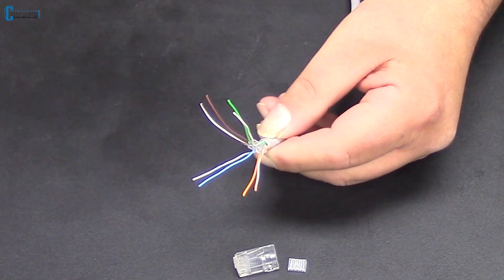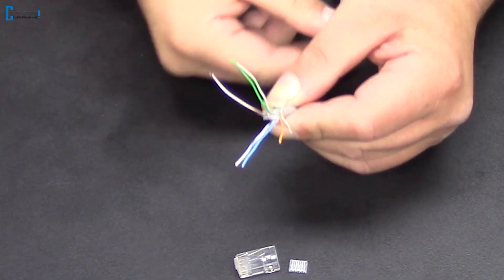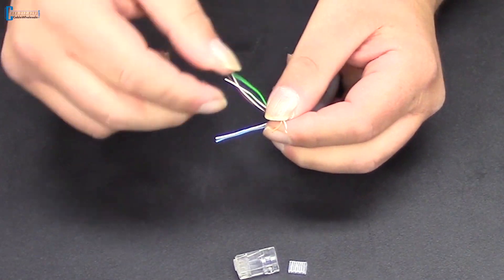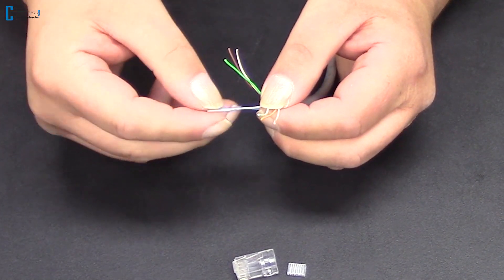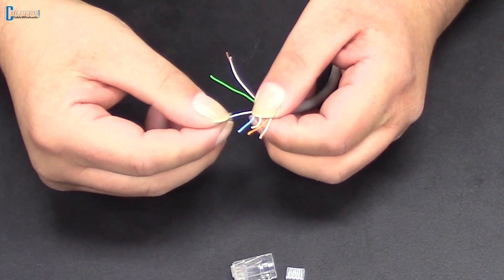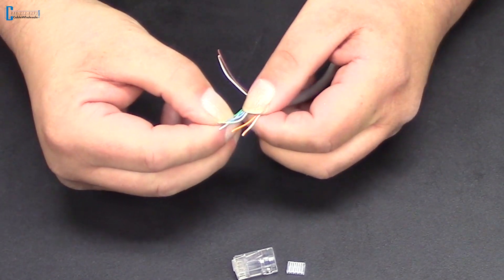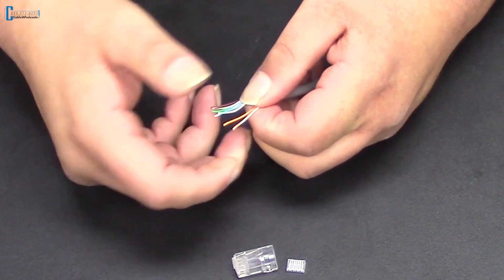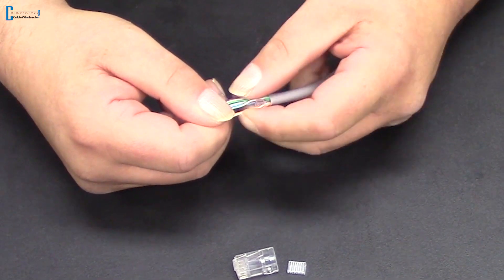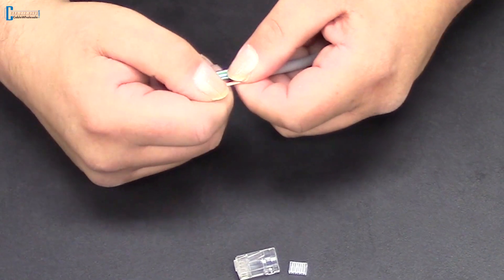Now it's time to get the conductors in the correct alignment. Following the 568B standard, we have orange stripe, orange, green stripe, blue, blue stripe, green, brown stripe, and brown. Following this color code, you can see why we separated the conductors in that specific order.